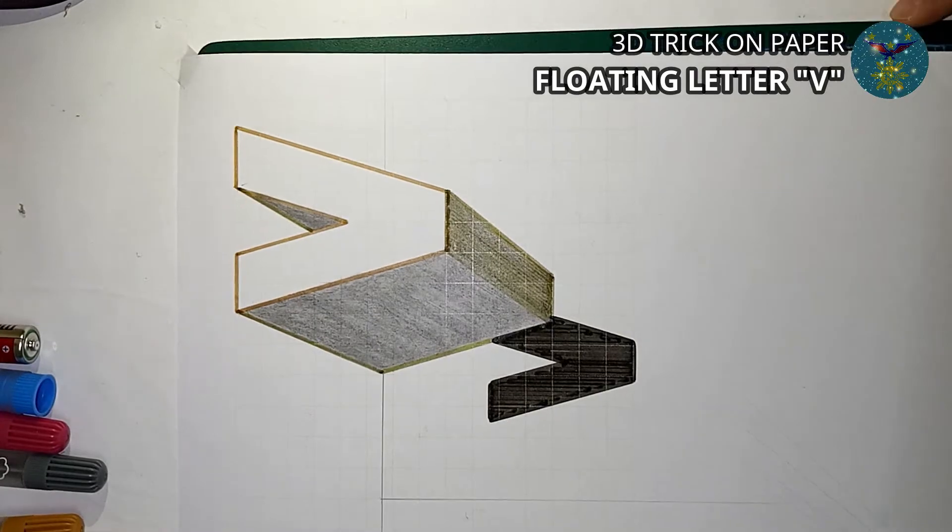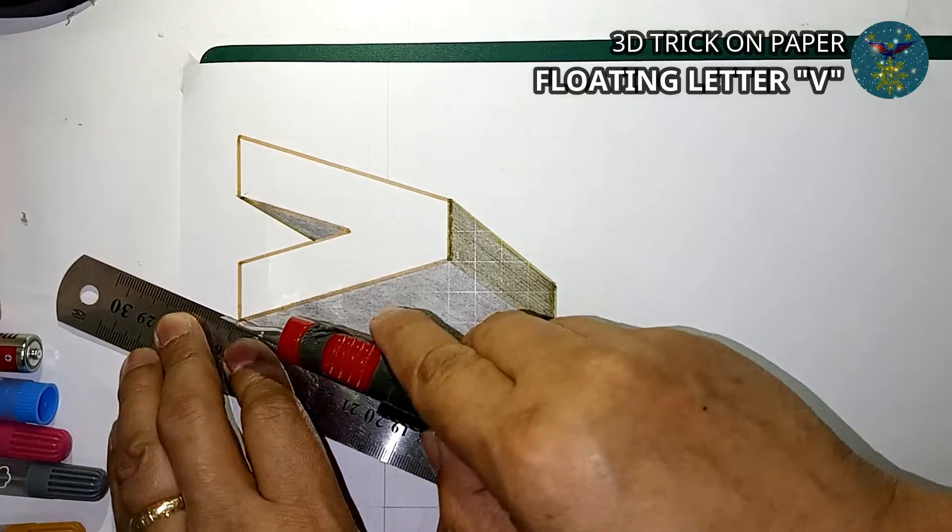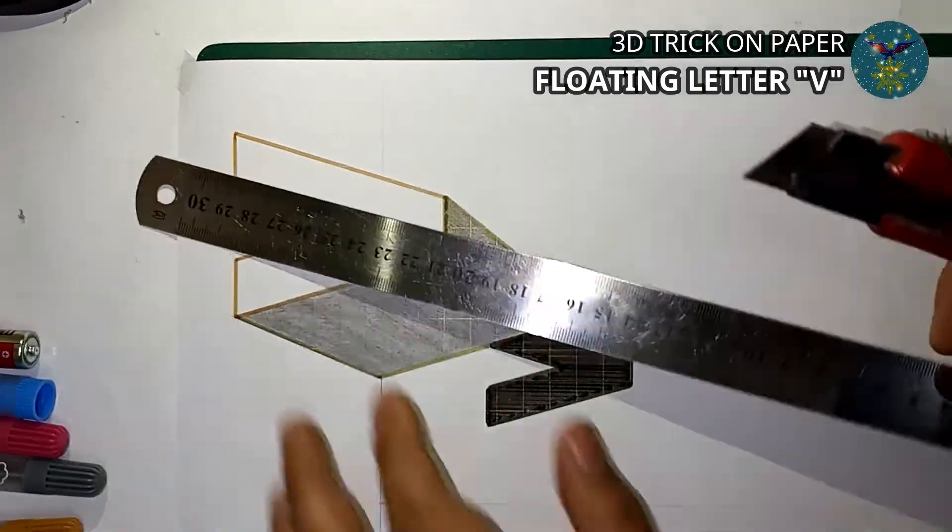Insert a rubber mat below the paper, then cut or remove the unnecessary part of paper using a steel ruler and cutter. Then let us see how the 3D letter trick works.